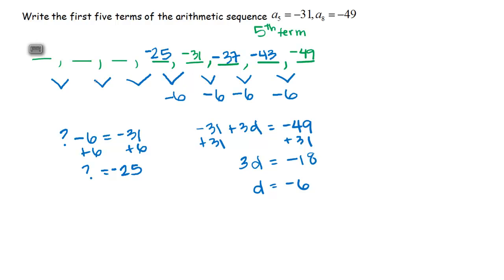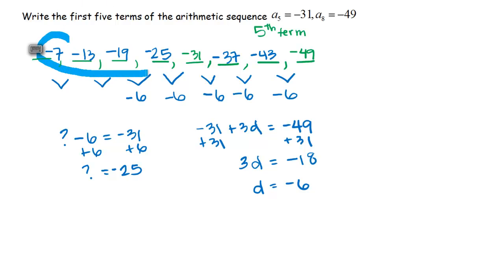Now I've established the pattern: to go left, I add 6; to go right, I subtract 6. So negative 25 plus 6 is negative 19, negative 19 plus 6 is negative 13, and negative 13 plus 6 is negative 7. There you go — the first five terms are negative 7, negative 13, negative 19, negative 25, negative 31.